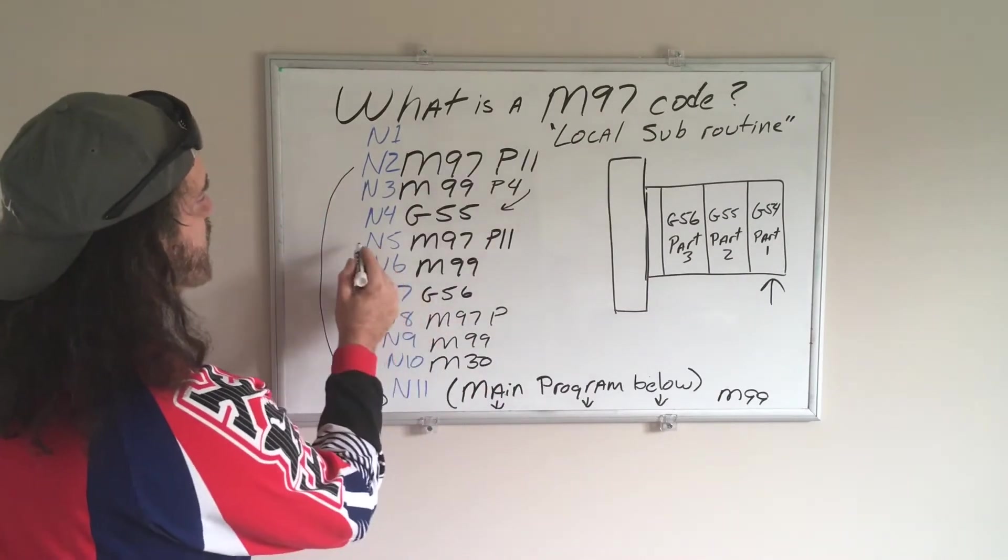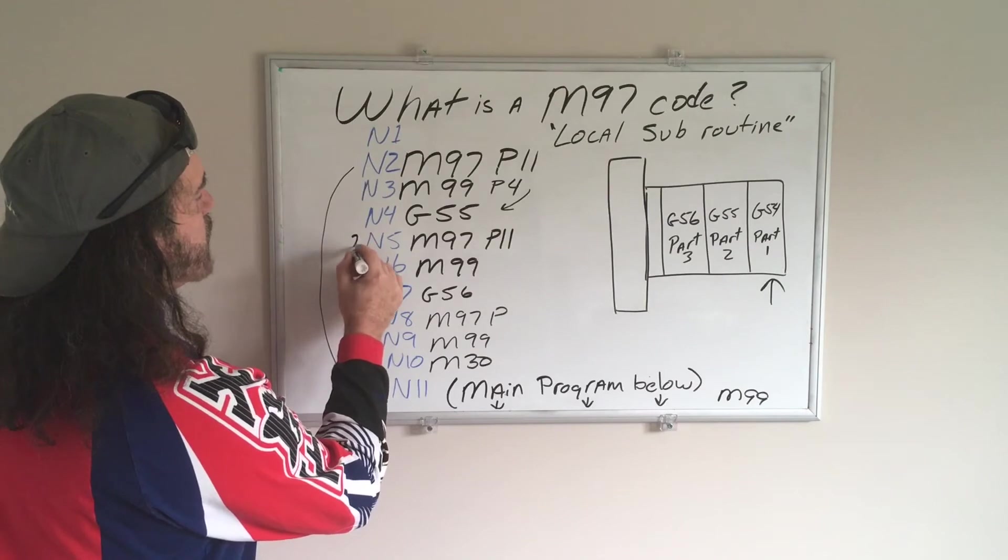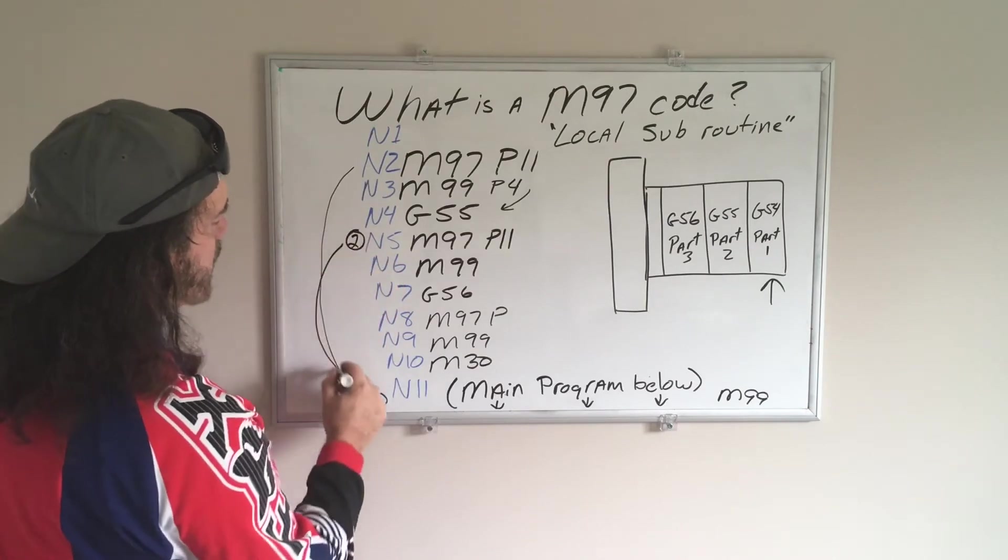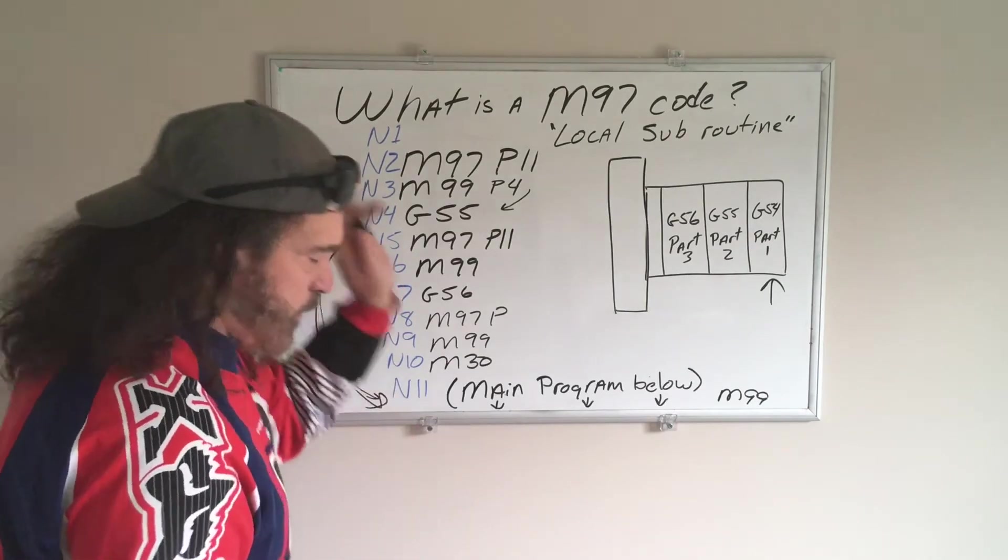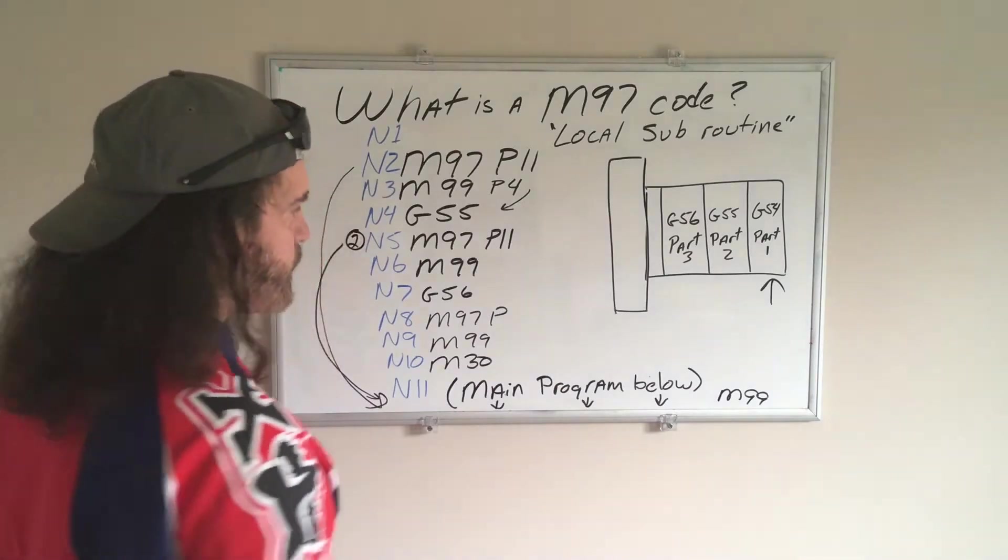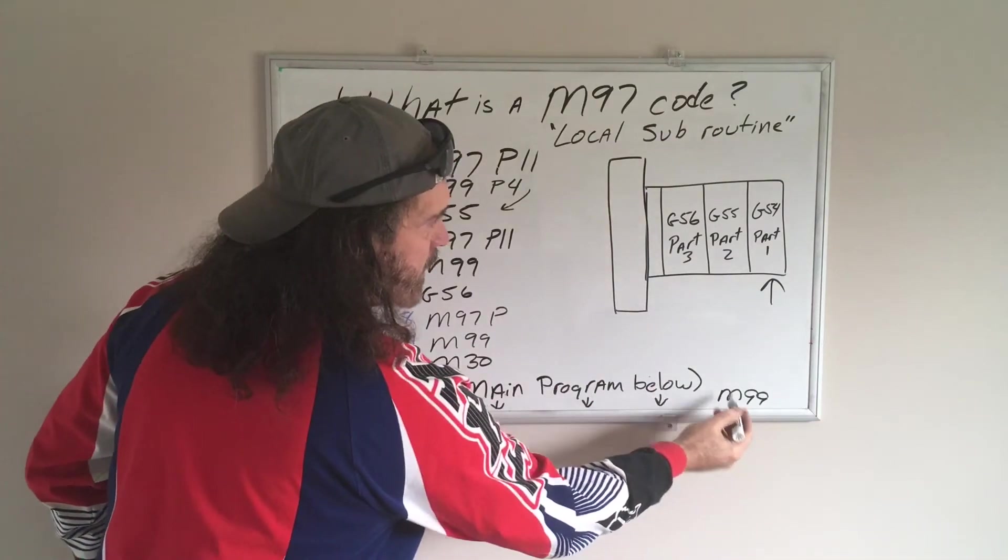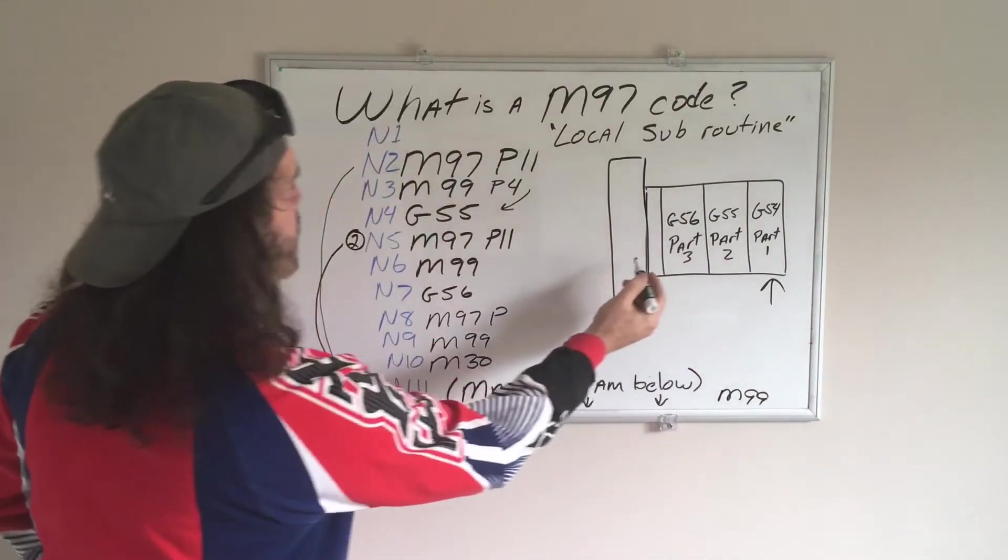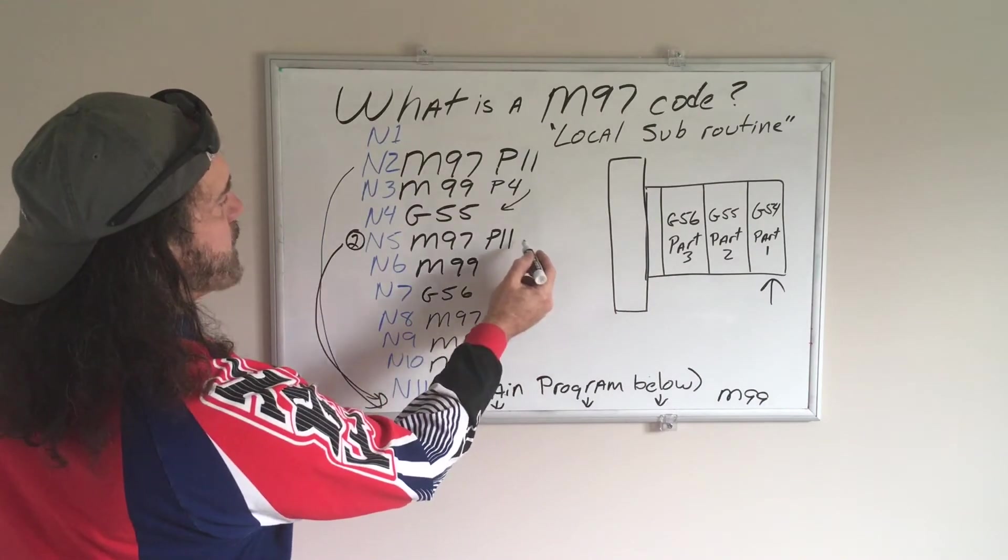And that's going to be my second part. So this is part number 2. And it's going to come down to here, do the whole program again. And then it's going to read the M99. It's going to loop back up, and it's going to come back to here.